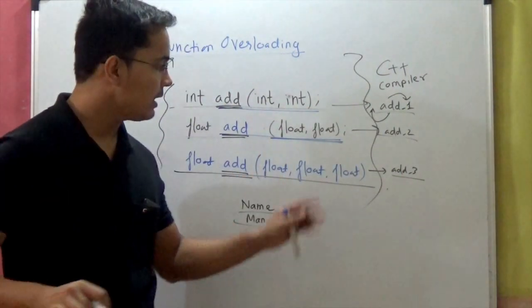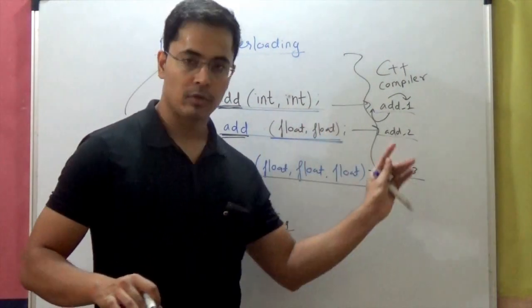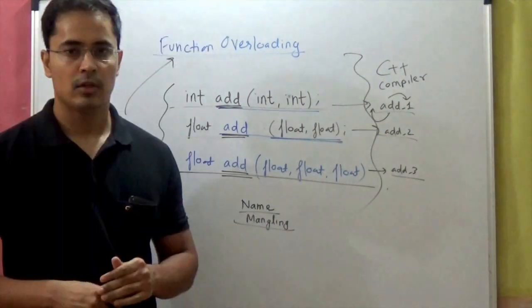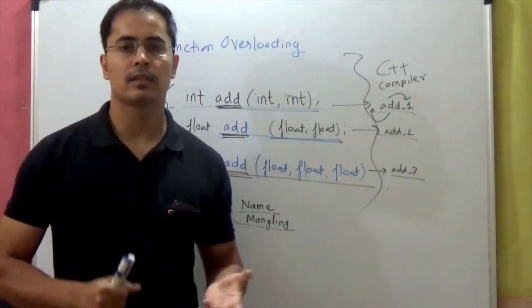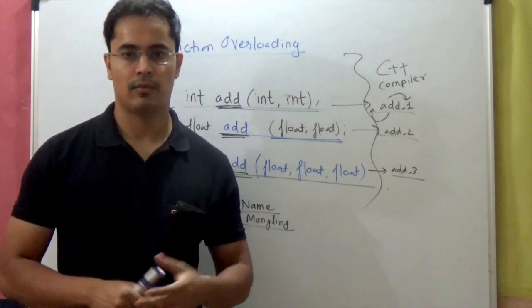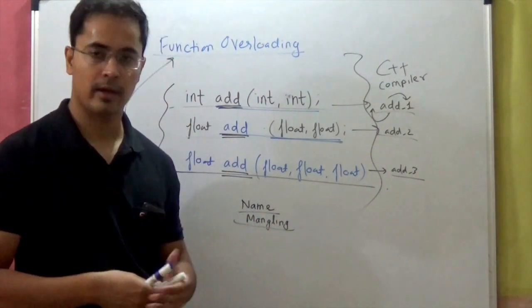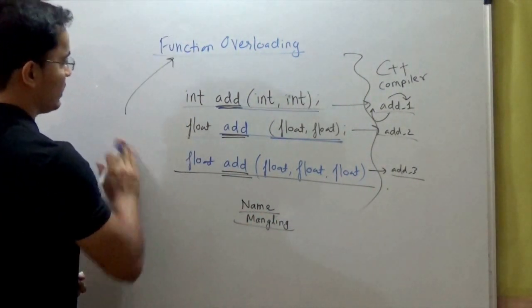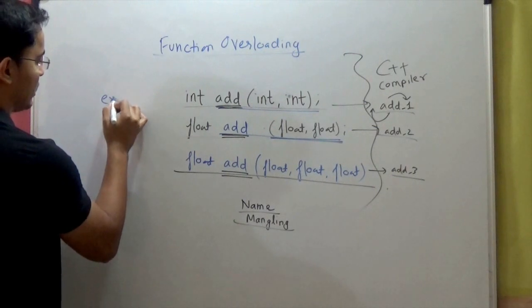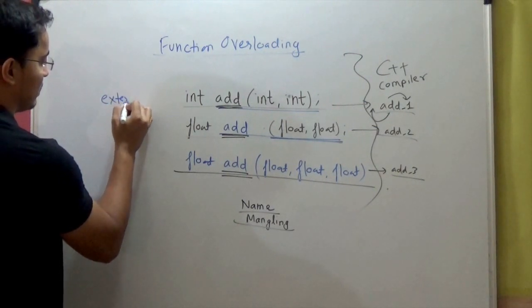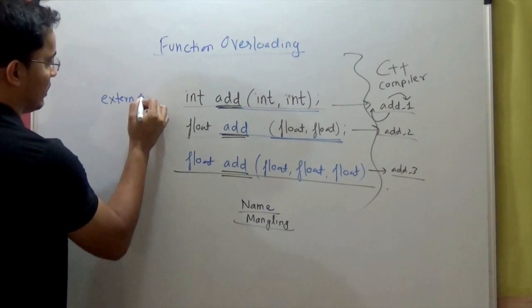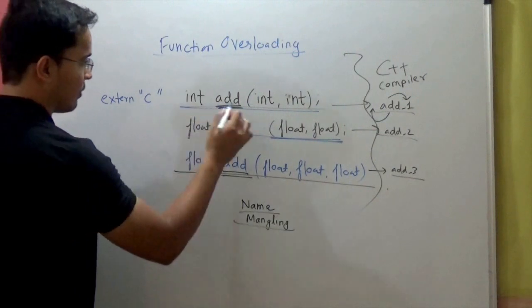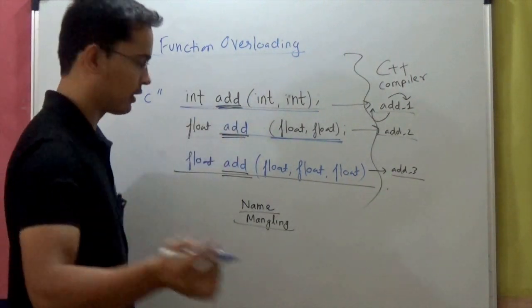So the compiler internally makes sure that the function names are actually different. If you want to prohibit a certain function from being overloaded in C++, you have a feature — a directive called extern. You have to mention it before you declare your function.